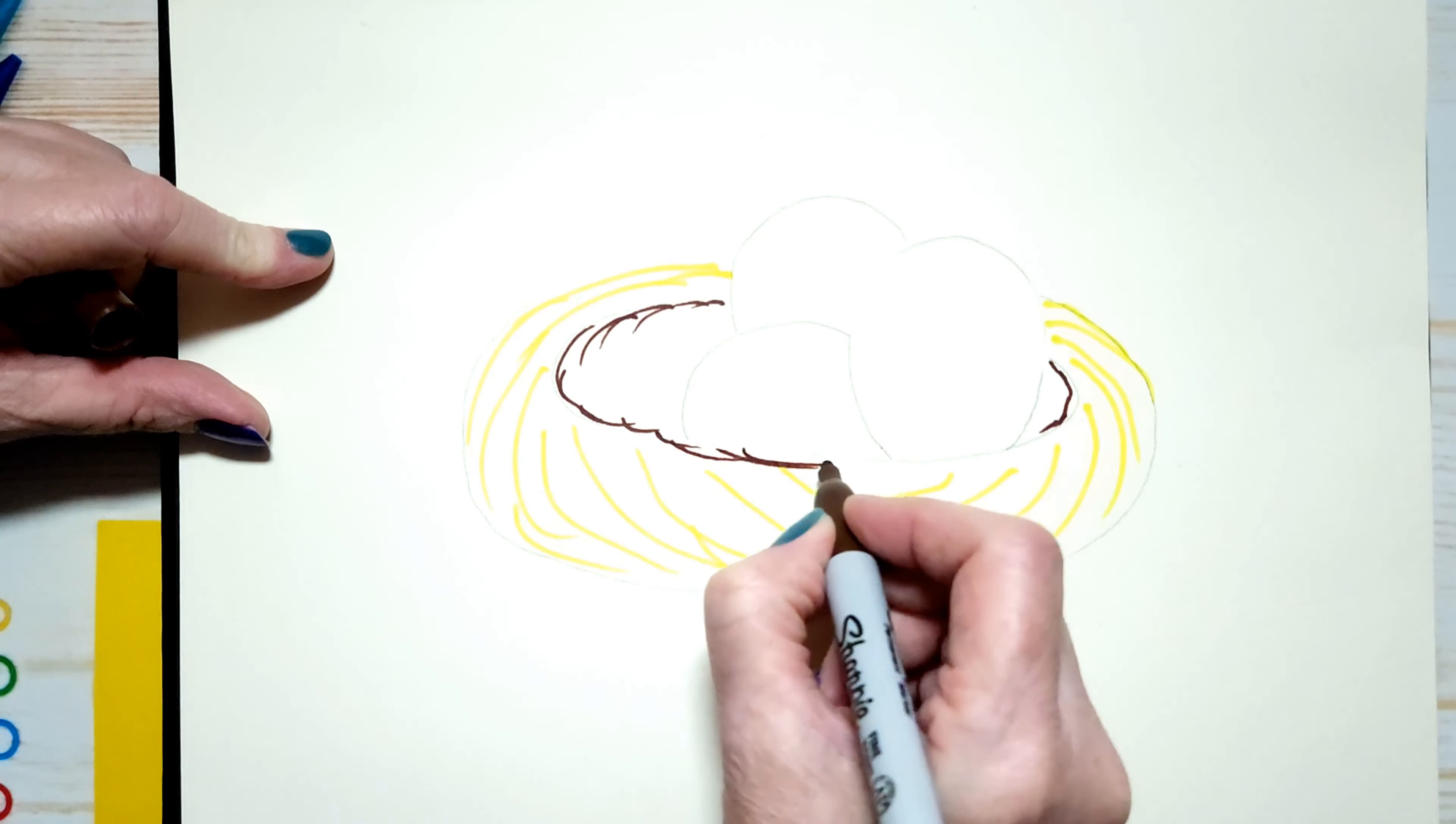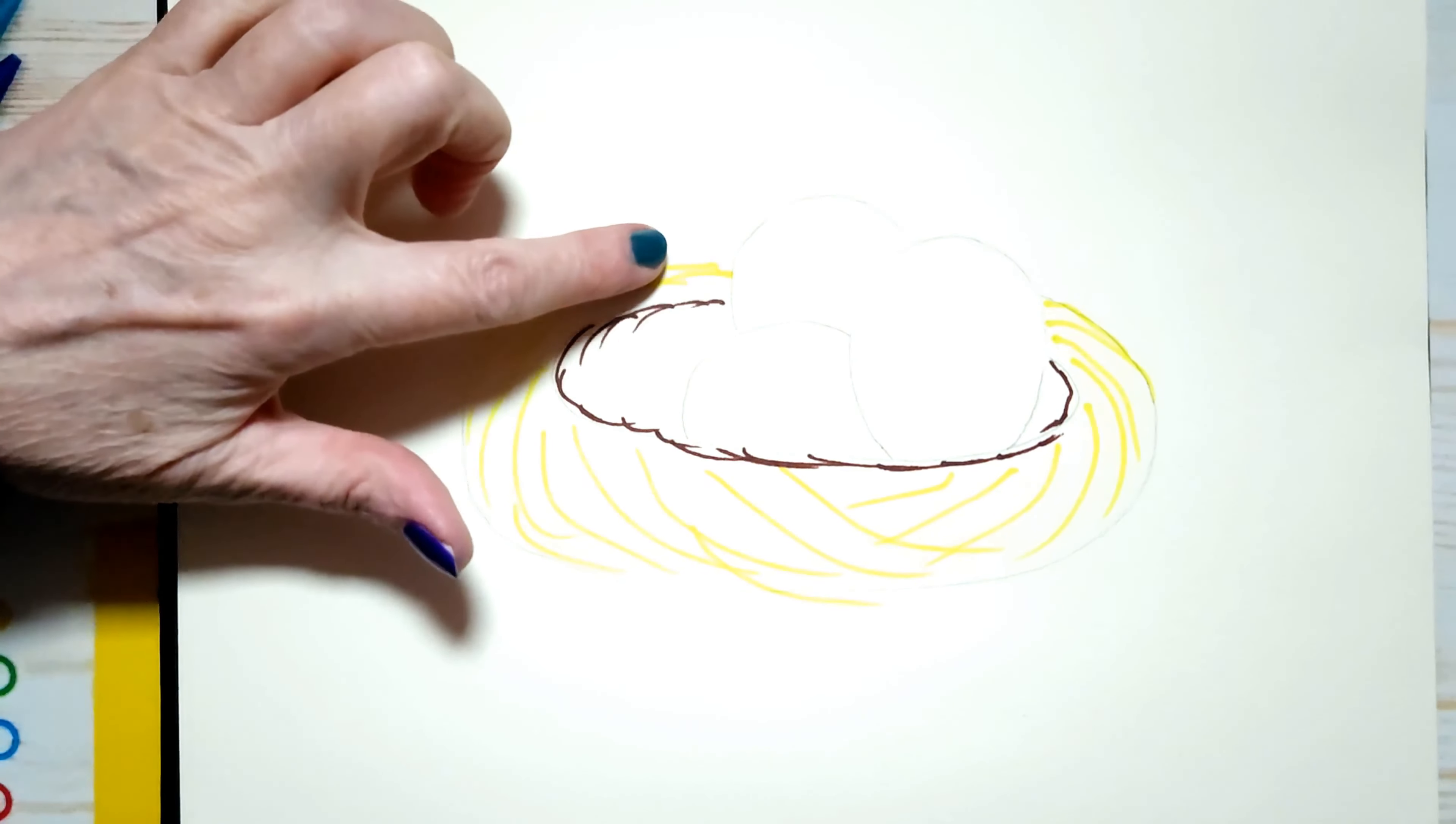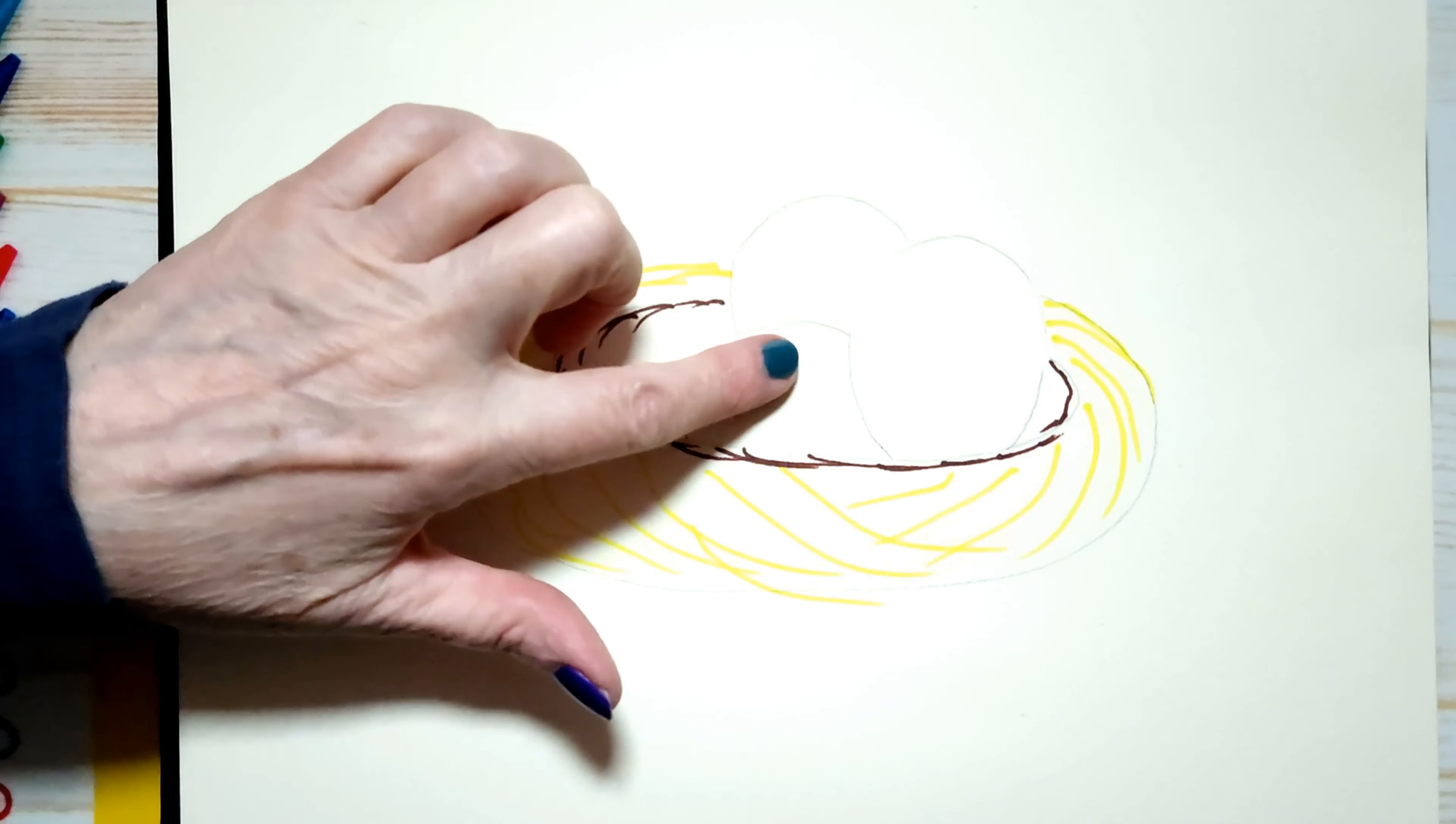And maybe at the bottom here. Now I have the shape of my nest. And I can erase all of these pencil marks, not the eggs yet though. I'm not going to erase the egg pencil marks just yet.